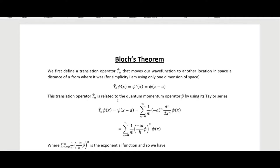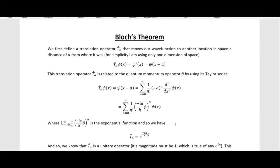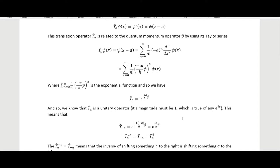The translation operator is related to the quantum momentum operator P-hat by using its Taylor series. We expand this into a Taylor series, do a little rearranging, and the summation of (1/n!) times this quantity is just the exponential function. So we end up with the exponential expression, and this exponential is actually sort of like the eigenvalue for this operator.